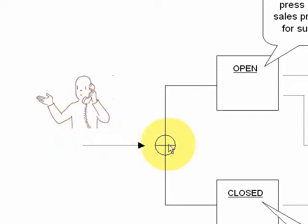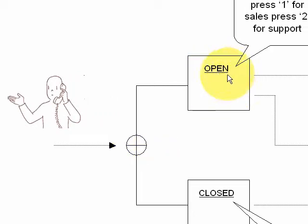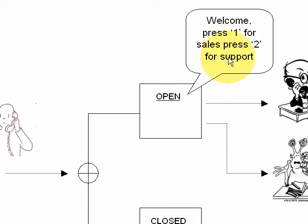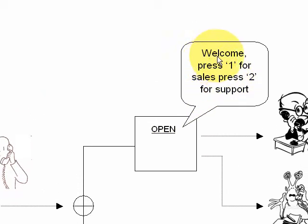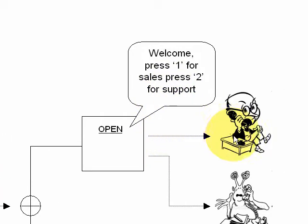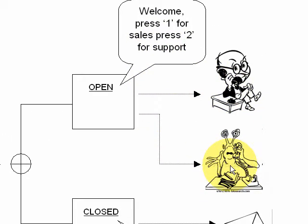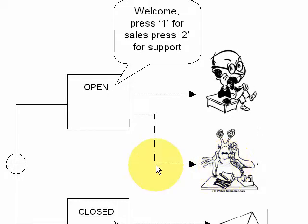So here's the customer — they're going to call in. There's a time switch here. If the press1 system is configured for open, it will divert to the open menu and here we're going to have some actions that take place. In this case, we play a message: press 1 for sales, press 2 for support. If the customer presses 1, they'll be diverted to the sales agent; if they press 2, they'll be diverted to the support agent.